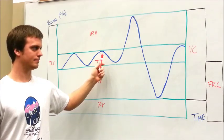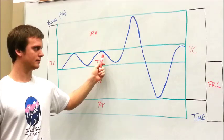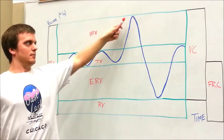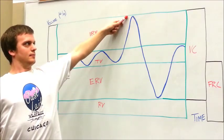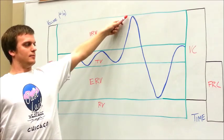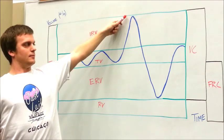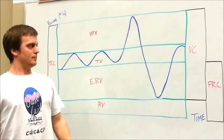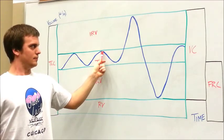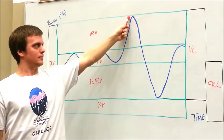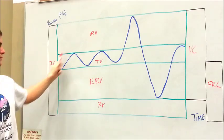Next, we're going to ask the patient to take a deep breath in, as much as they can. So now they're at their inspiratory reserve volume. That's the point from the top of their tidal volume to the top of their lung capacity. That is your inspiratory reserve volume.